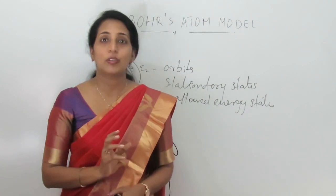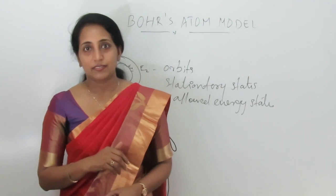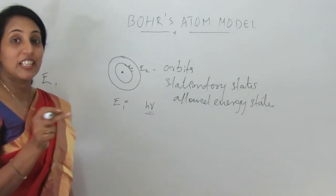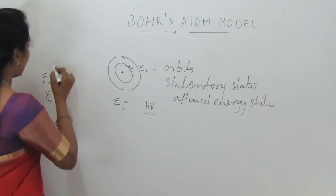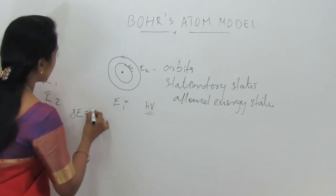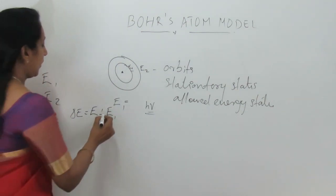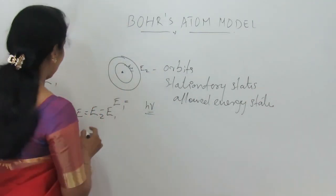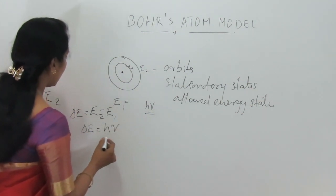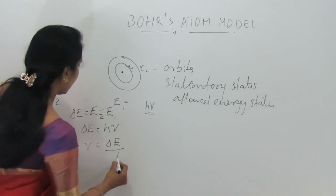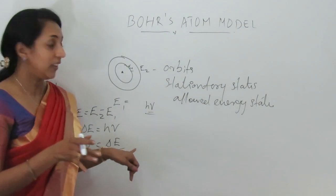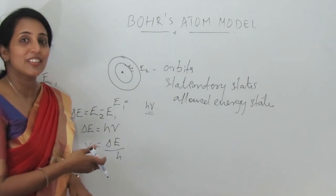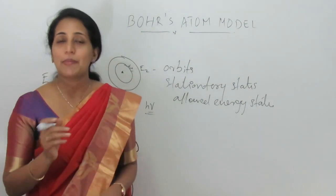The third postulate is about the frequency of the emitted or absorbed radiation. We have already studied that ΔE is equal to hν, so ν is equal to ΔE divided by h. ΔE is the energy change between two energy levels E1 and E2, and h is Planck's constant. By using this equation we can calculate the frequency of the absorbed or emitted radiation.